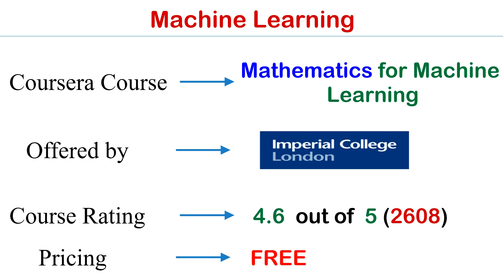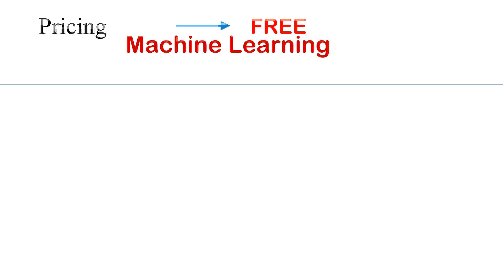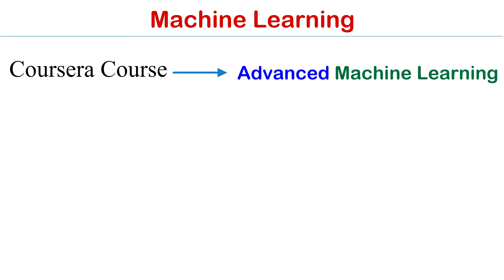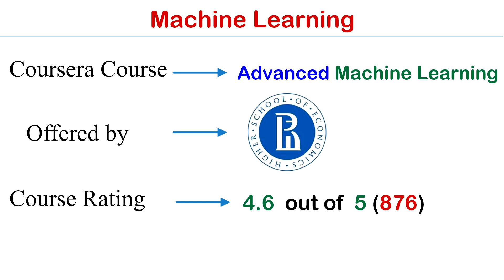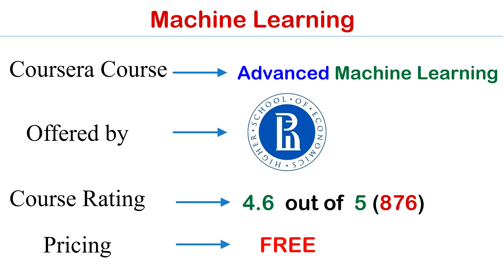Course number five is Machine Learning, offered by National Research University. The rating of this course is 4.6 out of 5 and the cost of this course is absolutely free. The link will be in the description box, so go through it once.